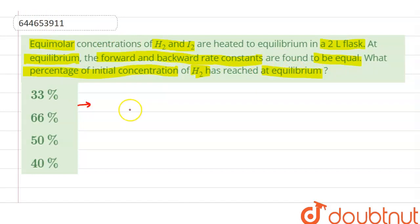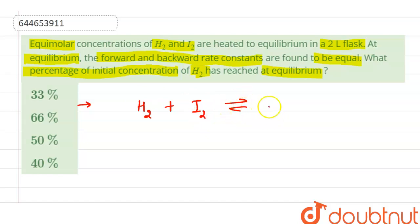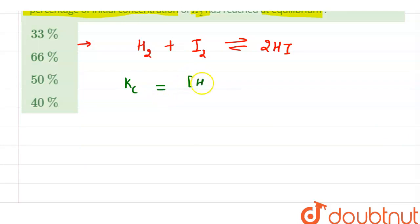First, we will consider how the equilibrium constant is defined in terms of concentration of reactants and products. The reaction is: H₂ and I₂ react to form 2HI. The equilibrium constant formula is Kc = [HI]² divided by [H₂][I₂]. One mole each of the reactants gives two moles of product.